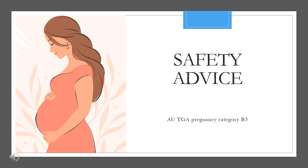Safety Advice. AUTGA Pregnancy Category B3 — drugs which have been taken by only a limited number of pregnant women and women of childbearing age, without an increase in the frequency of malformation or other direct or indirect harmful effects on the human fetus having been observed.